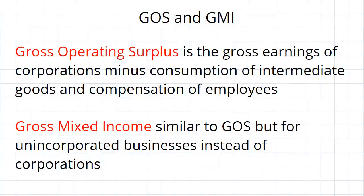Gross operating surplus is gross earnings of corporations minus consumption of intermediate goods and compensation of employees. This part is what makes it particularly important.